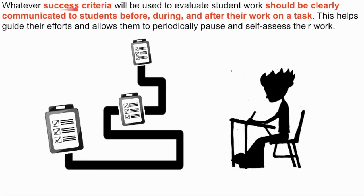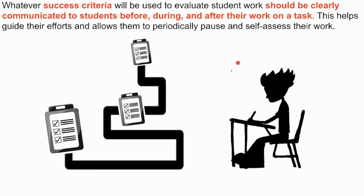Whatever success criteria will be used to evaluate student work should be clearly communicated to students before, during, and after their work on a task. This helps guide students' efforts and allows them to periodically pause and self-assess their work. If we don't communicate clear success criteria before, during, and after a task, it's very possible that students will put in a lot of work and feel disappointed or frustrated when their work does not meet the criteria we have established.